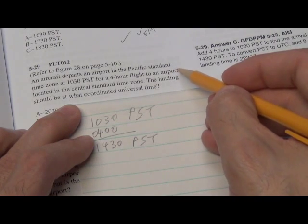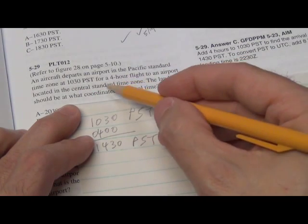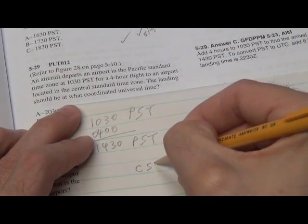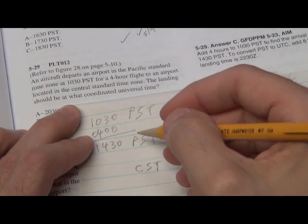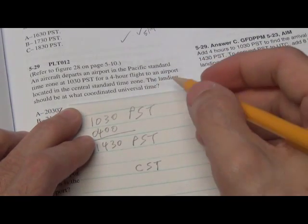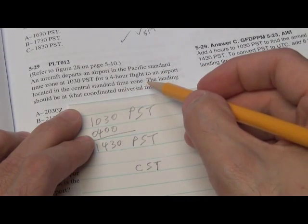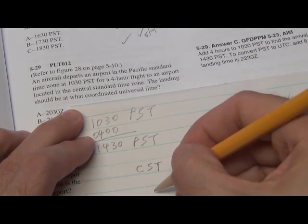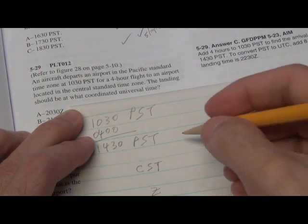He flew a four-hour flight to an airport located in the Central Standard Time Zone, the Central Standard Time Zone. So this time, he flew from west to east. The landing should be at what Zulu time? So ultimately, we're going to need to know what the Zulu time is.